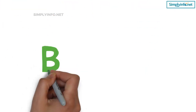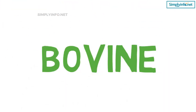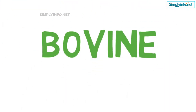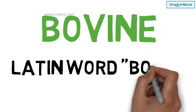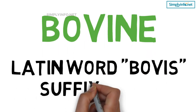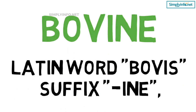Bovine. Bovine means placid like a cow — stolid, patient, unexcitable. It is built on the Latin word 'bovis,' which means ox or cow, plus the suffix '-ine,' which means like, similar to, or characteristic of.